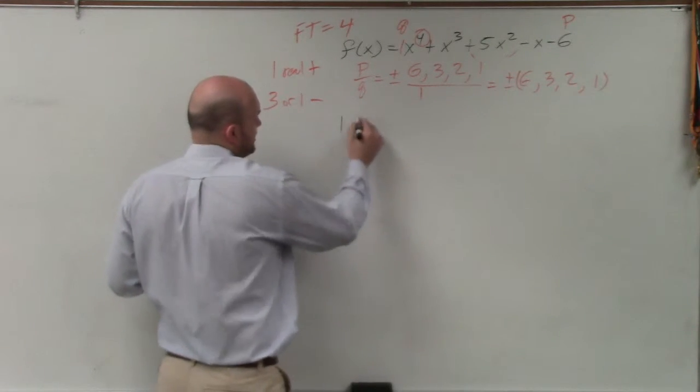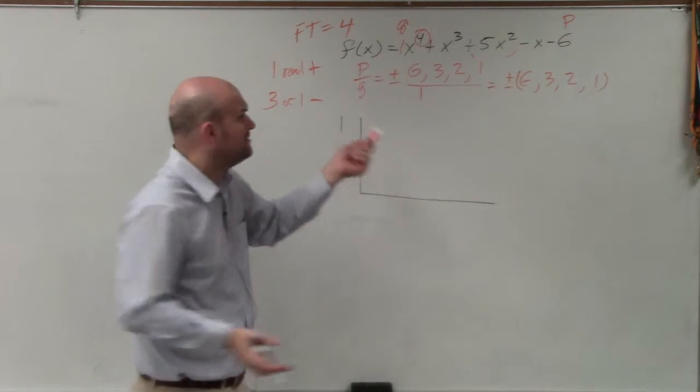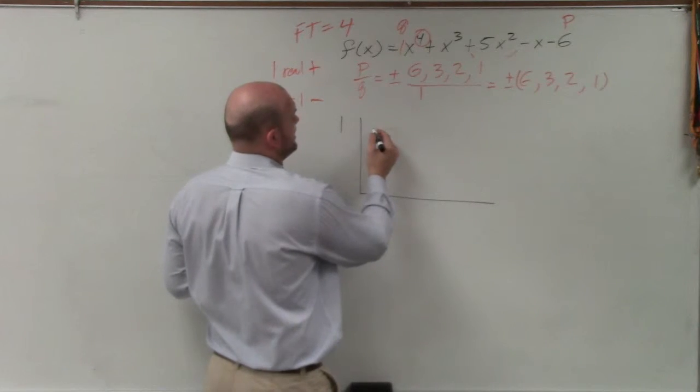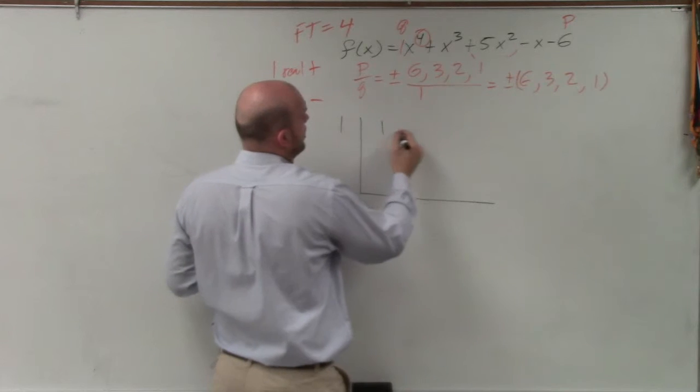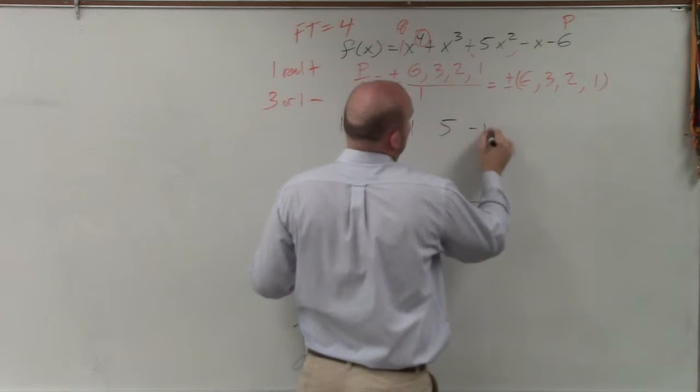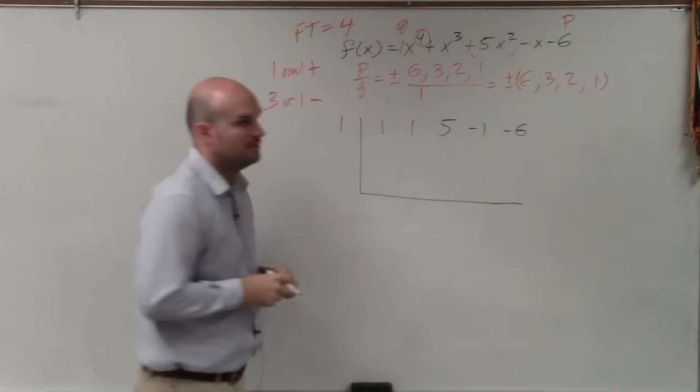So I did cheat, though. But even anyways, I would do 1 first. So let's go ahead and do that. Now I take the coefficients, 1, 1, 5, negative 1, negative 6. OK?